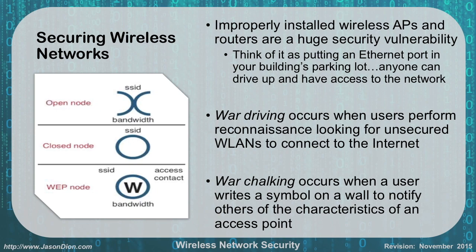If it's a closed network — password protected — it's written with a circle, and they haven't figured out the password yet, so they'll put down the network name. If they found a WEP access point, they mark it with a big W, because WEP — wired equivalent privacy — can be cracked by most hackers in under three to five minutes, making it almost like an open connection. For the exam, you don't need to know the exact war chalking symbols, but you do need to understand war driving and war chalking concepts. This culture actually comes from the hobo days of the 1930s, when people would write symbols on farmhouses to share useful information.